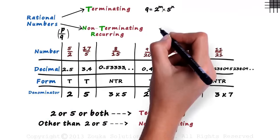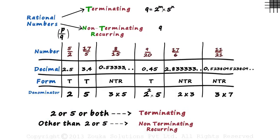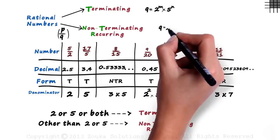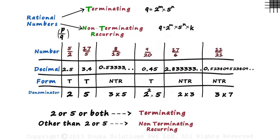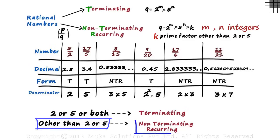And how do we generalize Q for non-terminating recurring decimals? It's simple! We write it as 2 raised to M multiplied by 5 raised to N multiplied by K. Where K is a prime factor other than 2 or 5 and M and N are integers. It can be 3, it can be 7 or 11, whatever. If the denominator contains any prime factor other than 2 or 5, it will be a non-terminating recurring decimal.